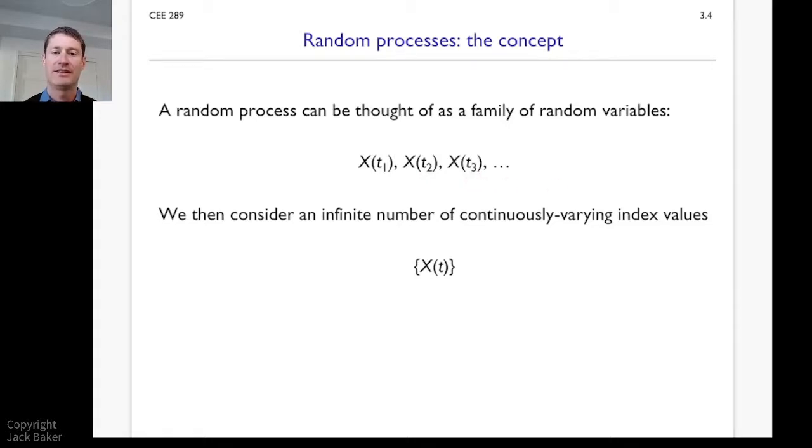And so I could just list out a whole bunch of instances in time that I'm interested in the value of this process. And then I could have probability distributions at any point in time and joint distributions at all these points in time. And what we'll do is we'll just let ourselves go to an infinite range of index values in general or a continuously varying range.